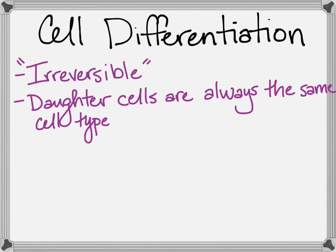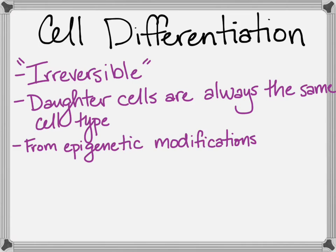So intestinal cells will produce more intestinal cells, and muscle cells will produce more muscle cells. These irreversible changes are mainly the result of epigenetic modifications.